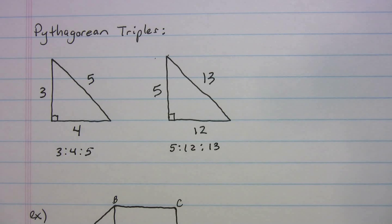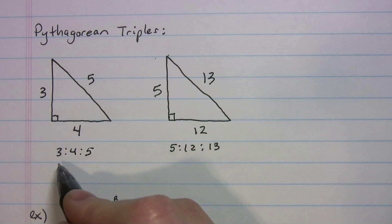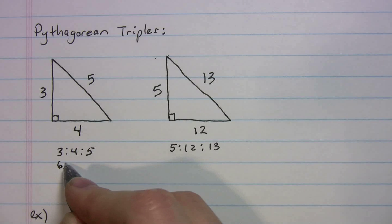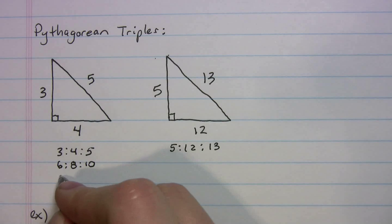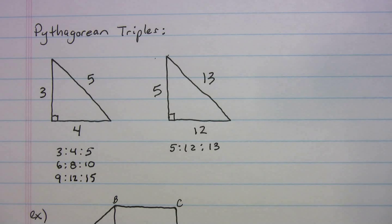And what's nice is once you know the 3-4-5, you really know all the multiples. You know other Pythagorean triples. So you can double everything. So then you know the 6-8-10. If you triple the 3-4-5, you get the 9-12-15. So you know a bunch of them.